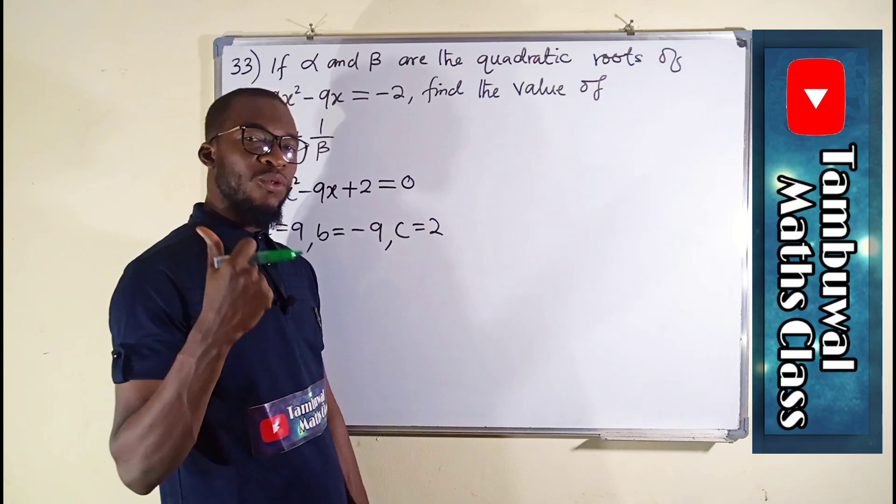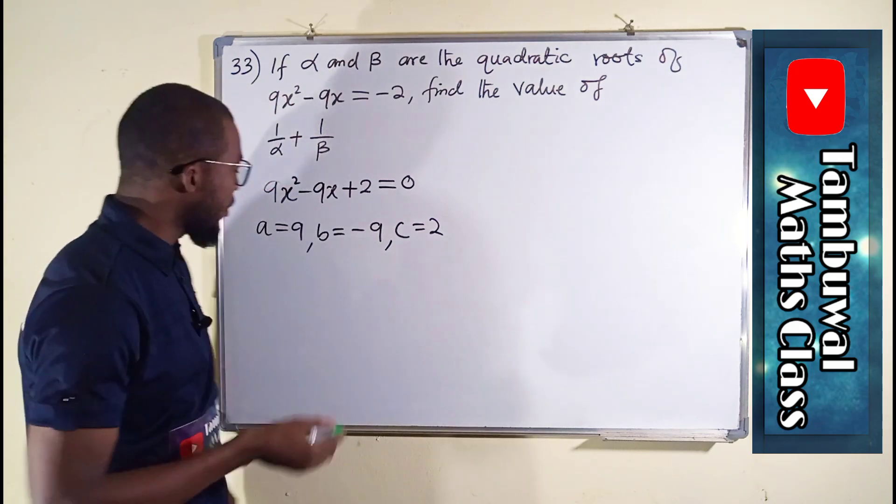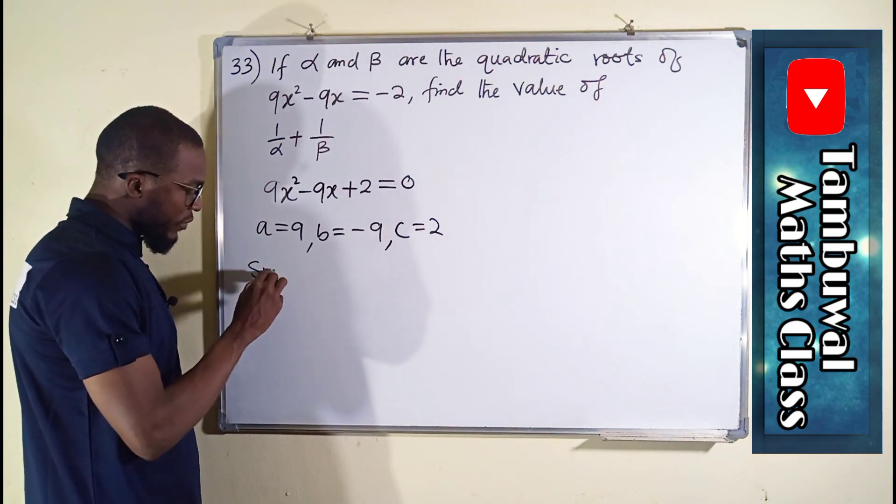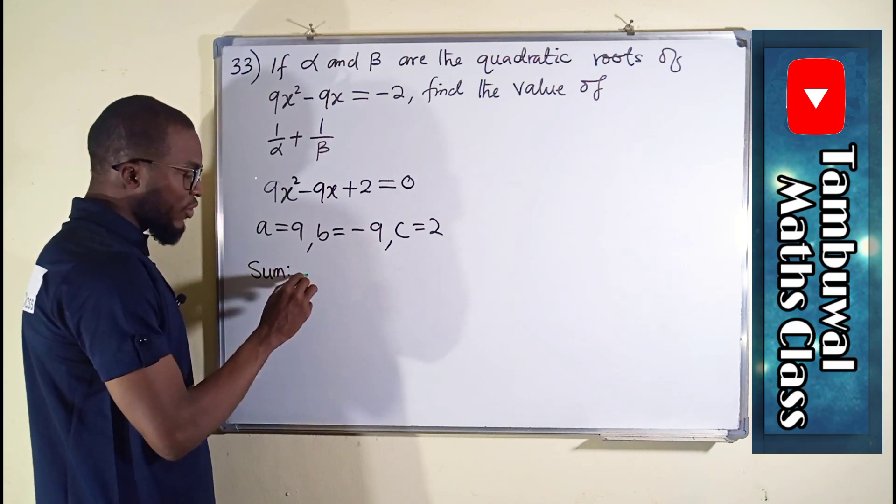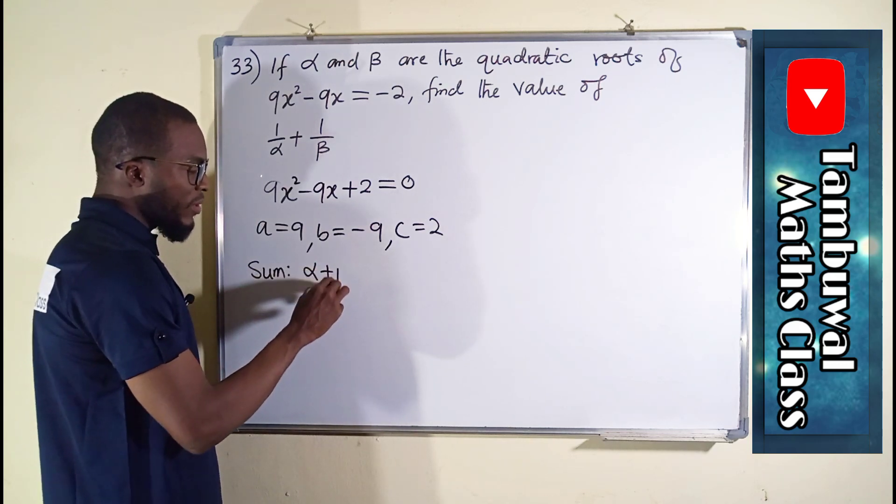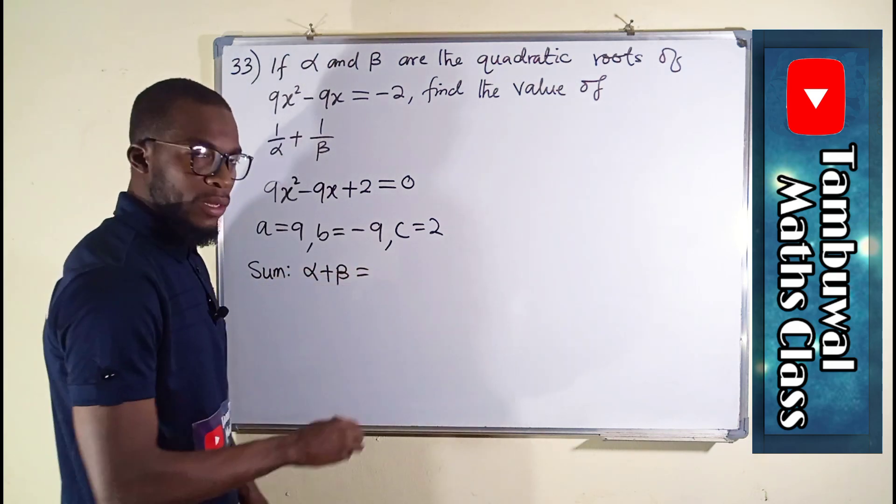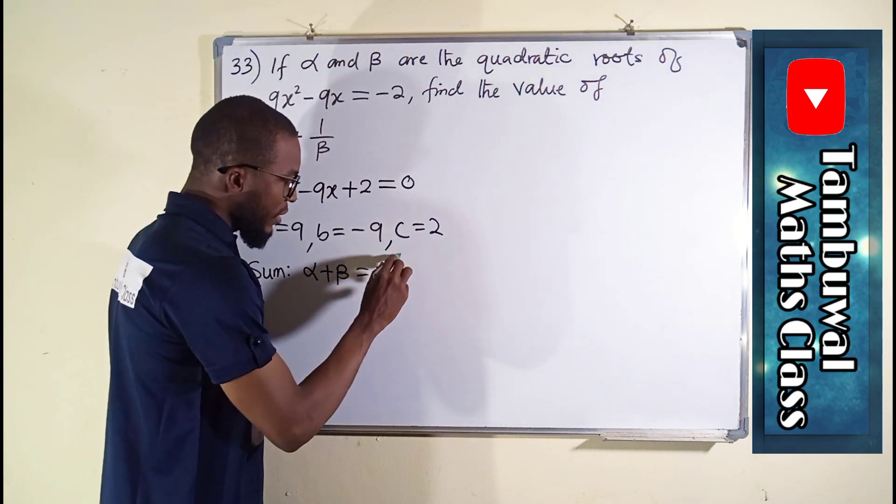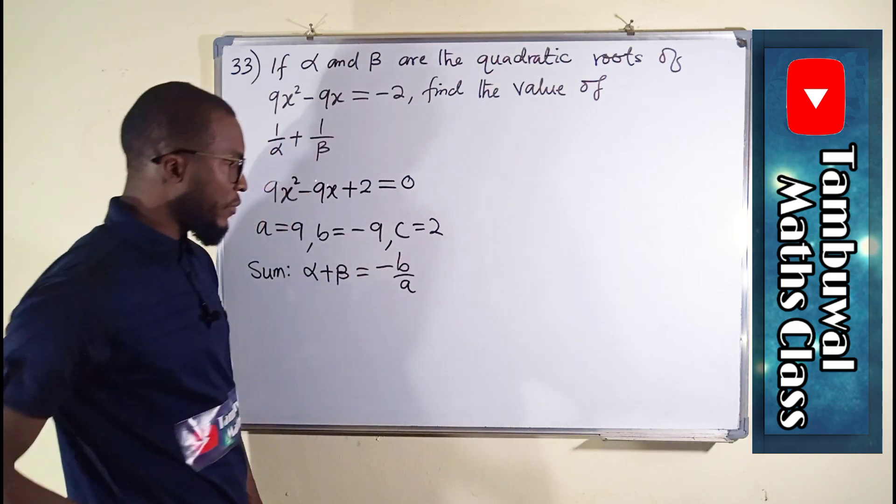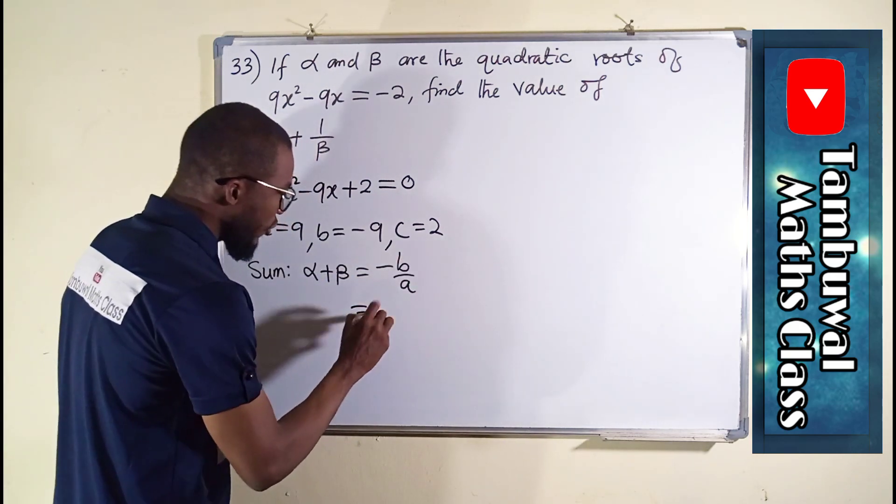So you cannot solve this question without obtaining the sum and the product of roots. If you have watched my initial video, you have seen that. So for sum of roots, which is alpha plus beta, sum of the roots can be obtained by taking negative B over A.